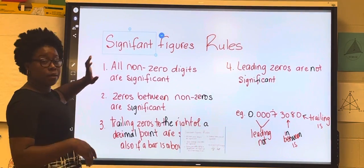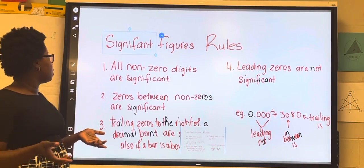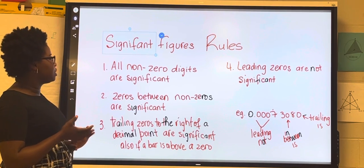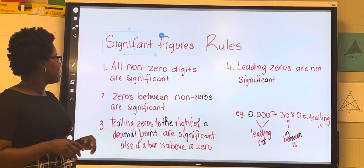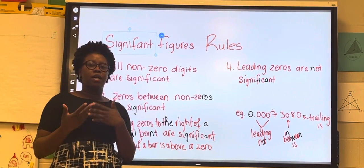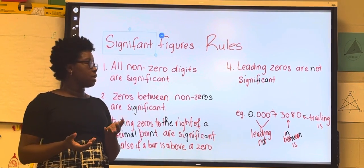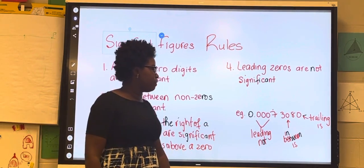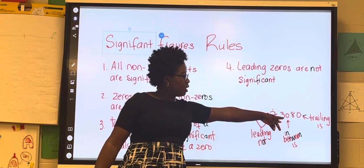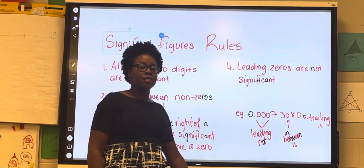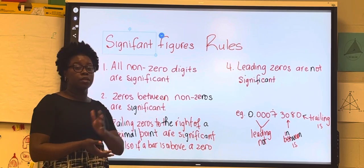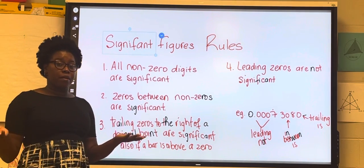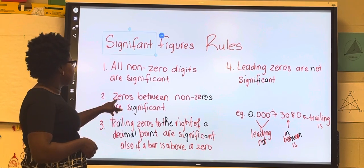So I wrote them down for you and I'm going to explain them as I go. Significant figure rules: the first one says all non-zero digits are significant. The non-zero digits are basically your counting numbers. If you look at the example I have here, seven, three, and eight are considered to be non-zero numbers, so those numbers are considered to be significant. They also lie between zero and nine.